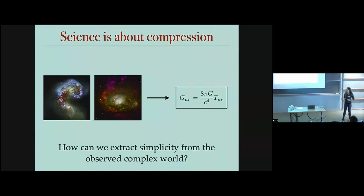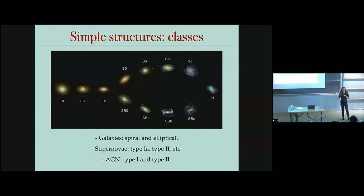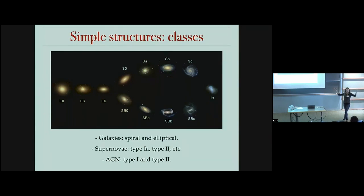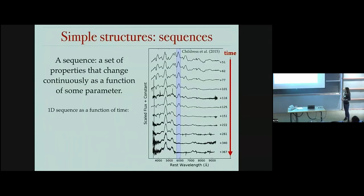There are various ways of finding simple structures in data. One of them is finding classes — astronomers like classifying and clustering things into classes. I'm listing just a partial list of the types of classes we give astronomical objects. This is a form of compression: we're moving from countless objects into several defined classes. It can also allow us to extract physical meaning by comparing properties of objects within a class to those in different classes, letting us learn new physics.